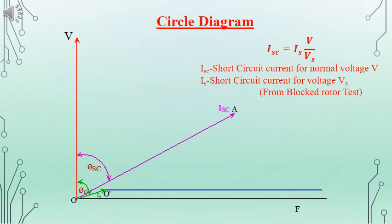In order to draw the circle diagram, in the vertical direction we will be drawing the voltages. Perpendicular to the voltage, we can draw OF in the horizontal direction. Using a scale for the current, we can draw ISC lagging by the short circuit power factor angle from the voltage, and I0 lagging by the no-load power factor angle from the voltage. With the same scale, we draw a parallel line from the tip of I0 parallel to the line OF.